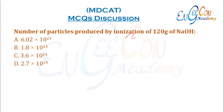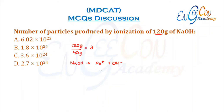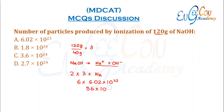Number of particles produced by ionization of 120 grams of NaOH. First, find the moles of NaOH: 120 divided by 40 grams equals 3 moles. Now, ionization of one NaOH particle gives one positive and one negative ion. So 3 moles give 3 × Avogadro's number of molecules, and since each molecule gives 2 particles, total = 6 × Avogadro's number = 3.6 × 10²⁴ particles.